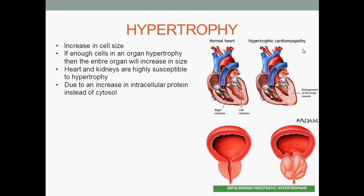Next is hypertrophy. In contrast to atrophy, hypertrophy is an increase in cell size, and if enough cells in an organ undergo hypertrophy, then the entire organ will increase in size. The heart and kidneys especially are highly susceptible to hypertrophy. This is due to an increase in intracellular protein instead of cytosol.